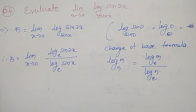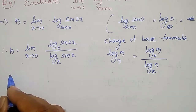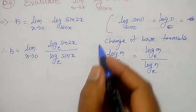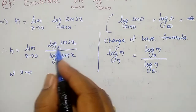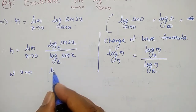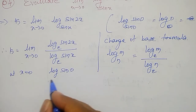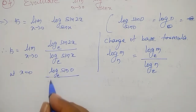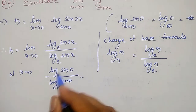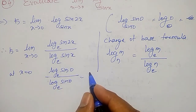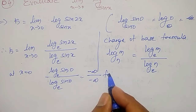Now let me check in which form it is. At x equal to 0, what happens: log of sin 0 to the base e divided by log of sin 0 to the base e. That is nothing but log 0, which is minus infinity divided by minus infinity form.